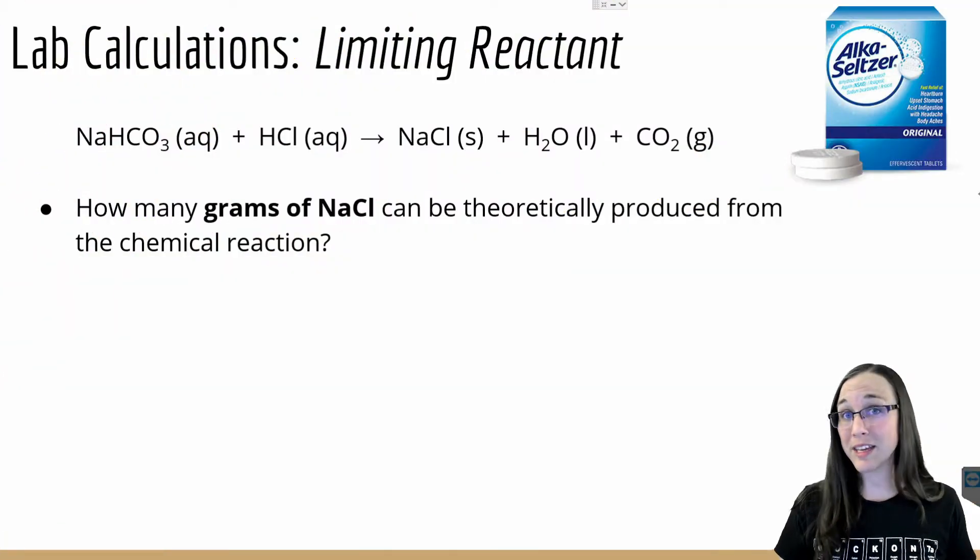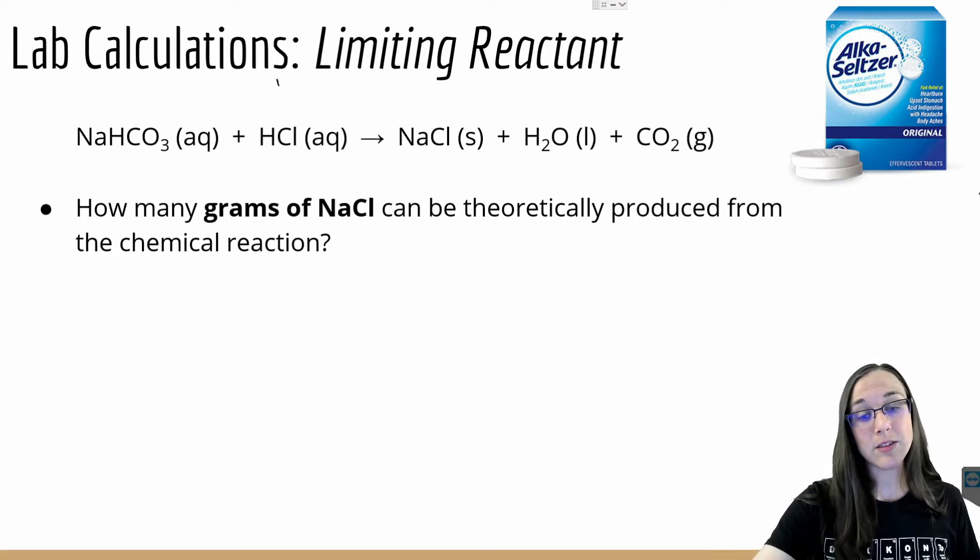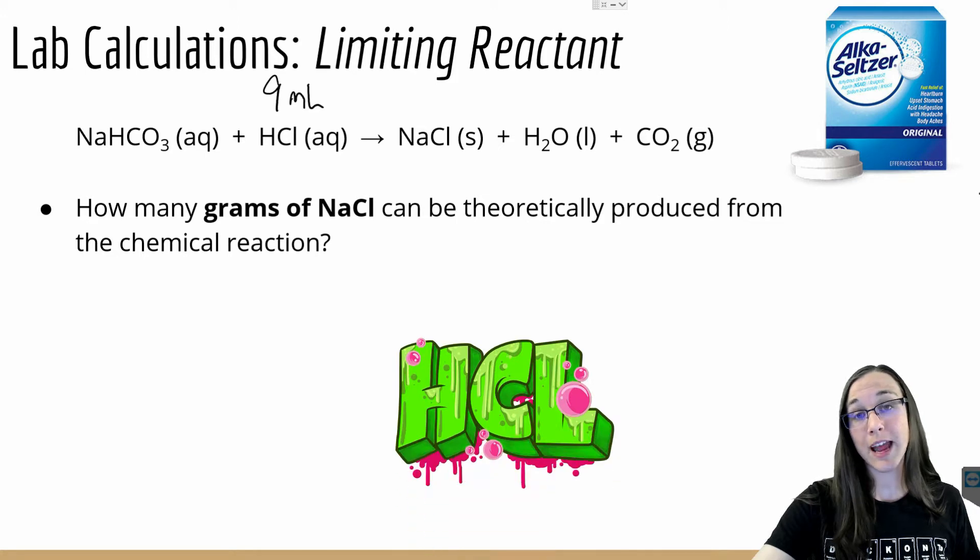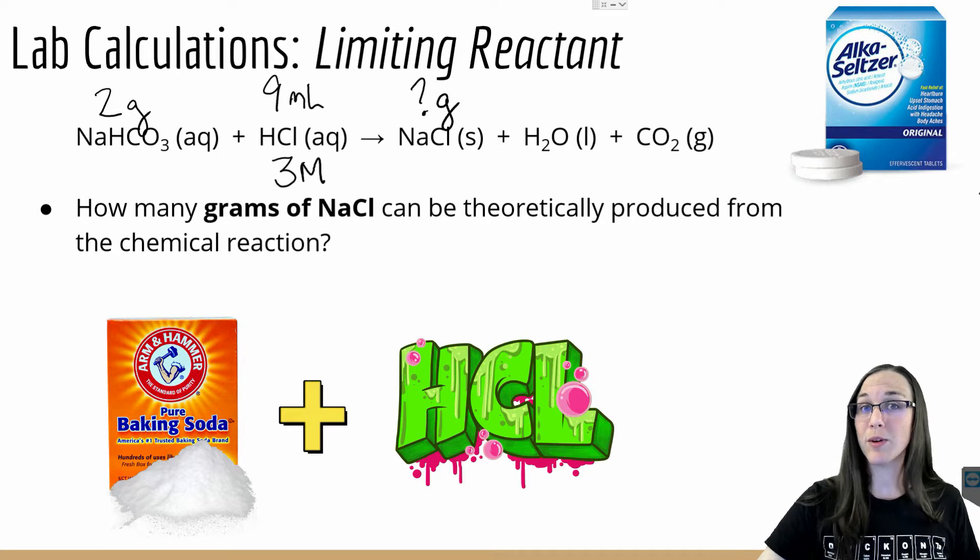Before I show you the experiment I performed, let's do the calculation for which one is the limiting reactant. If I used 9 milliliters of hydrochloric acid at a concentration of 3 molar and I used 2 grams of baking soda, how many grams of salt NaCl could I theoretically produce from that chemical reaction? Let's draw two magical lines to freedom to figure that out.